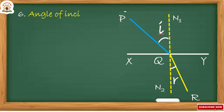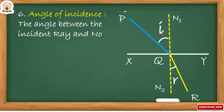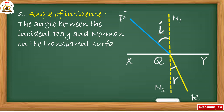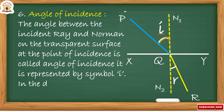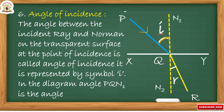The angle of incidence is the angle between the incident ray and the normal on the transparent surface at the point of incidence. It is represented by the symbol i. In the diagram, angle PQN1 is the angle of incidence.